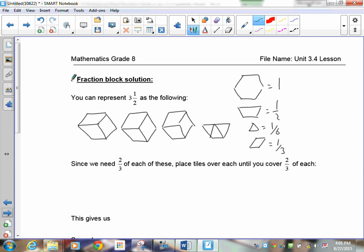Now we need two-thirds of each of these. So I'm going to divide each one of these shapes into three equal pieces. If you remember that, this is how this works. Hopefully you'll remember. Now remember that this here, the hexagon was equal to 1, the trapezoid was equal to a half, the triangle was equal to a sixth, and the rhombus was equal to a third. Remember this from before?